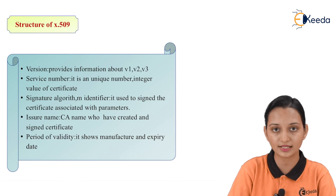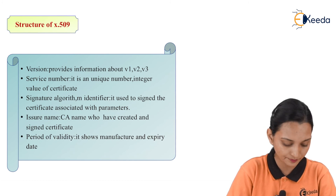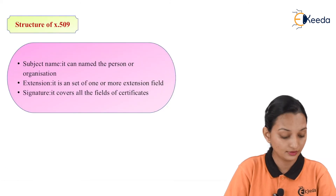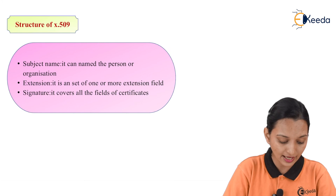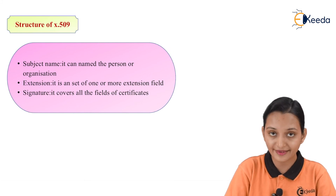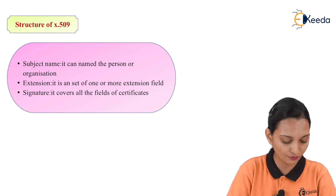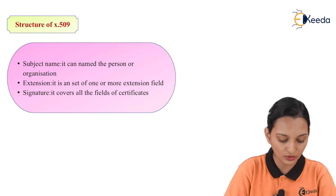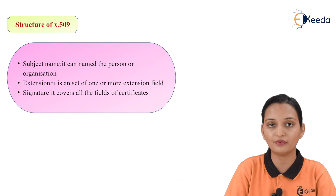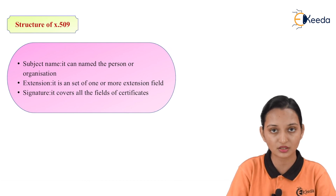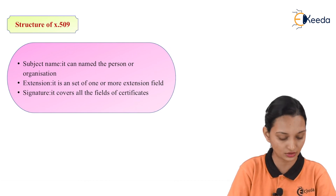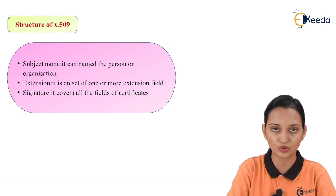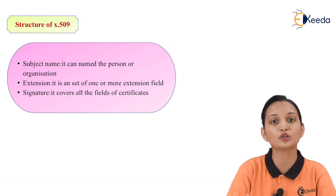These are the few things we have already seen as stated in the structure of X.509. The next remaining things are: subject name, which names the person or the organization; extension, which is a set of one or more extension fields; and last, signature, which covers all the fields of the certificate. So, if I want to verify the authorized user or the identity of a person or the validity of the certificate, I can do so with the help of Version 1, Version 2, or Version 3. The X.509 is able to provide us a structure which is able to prove the identity.